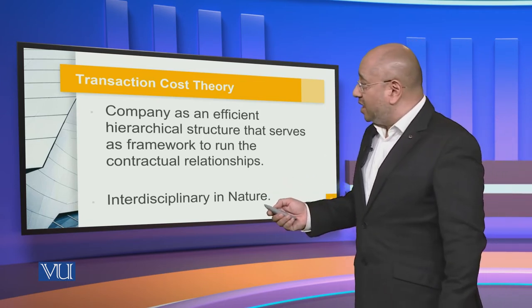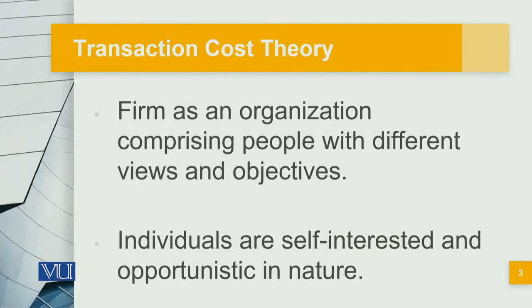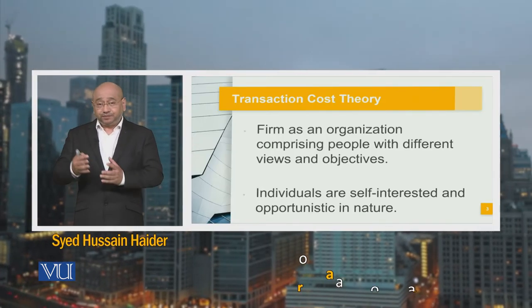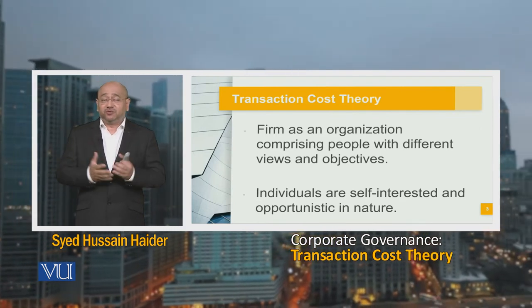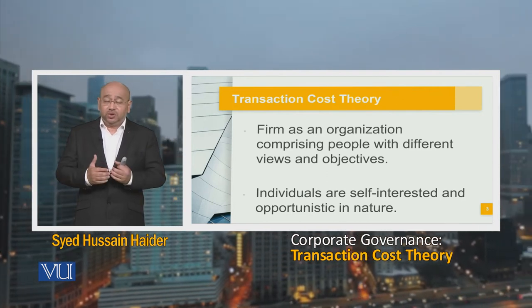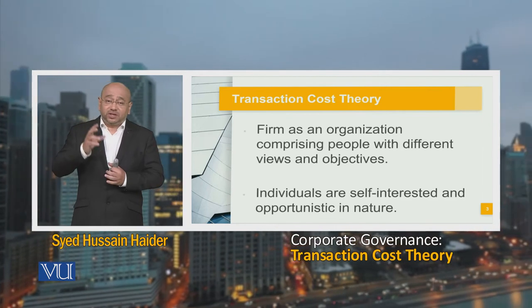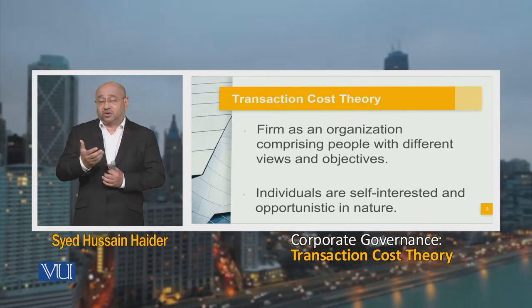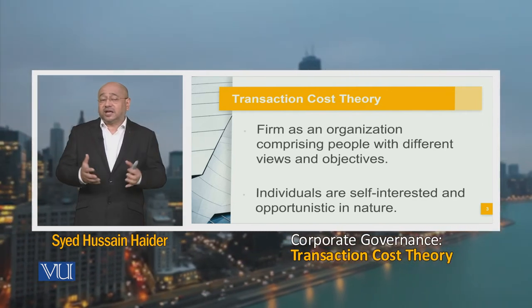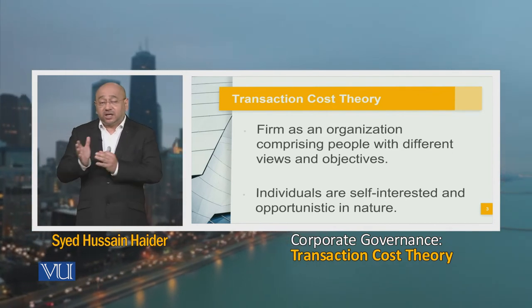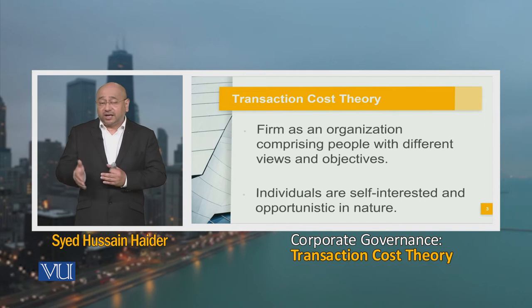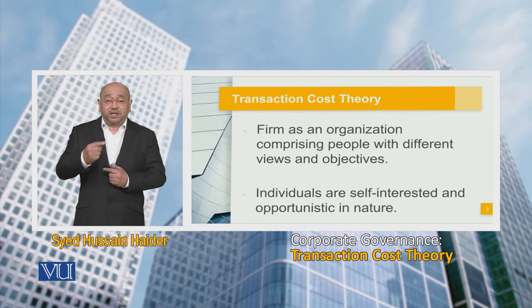The firm as an organization comprising people with different views and objectives — individuals are self-interested and opportunistic in nature. These two points tend to categorize this particular theory. On the one hand, we see the firm as an organization which has a rainbow of people with different views and objectives, people who interpret and understand things differently, who look at the organization's products and values from a different context altogether. This creates a political metabolism and dynamic which exists within that organization, which can have a positive or a negative effect. The transaction cost theory tries to channelize all of this towards a more positive context, which would then lead to the betterment of the organization.